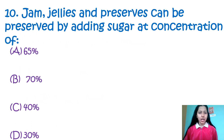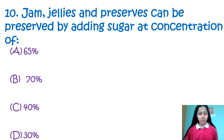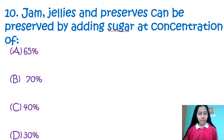Question number 10: Jam, jellies and preserves can be preserved by adding sugar at a concentration of 65%, 70%, 40%, or 30%. Sugar is a first-class preservative used at a concentration of 65% to preserve jam, jellies and other related food products. So my correct option is option number A, that is 65%.